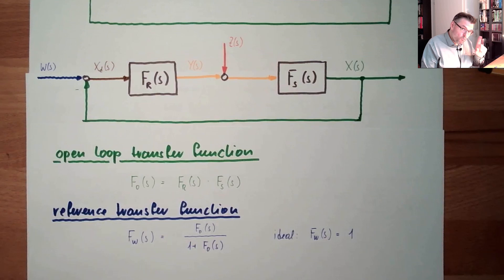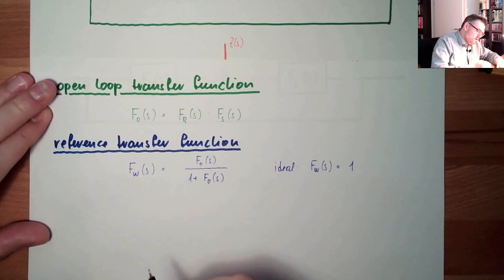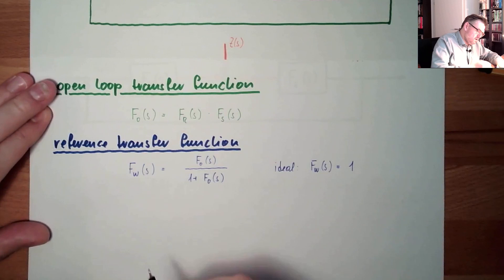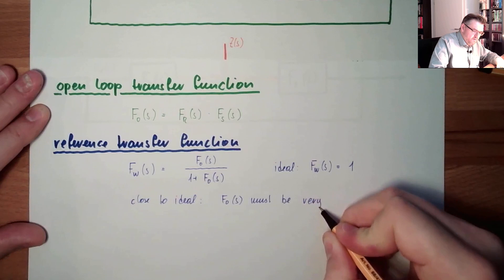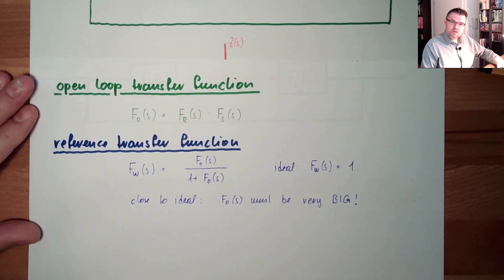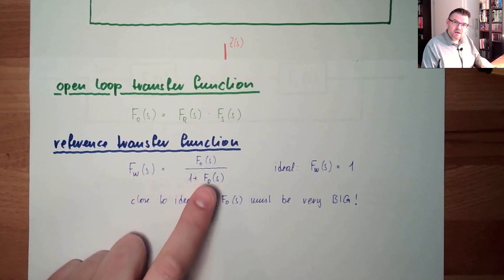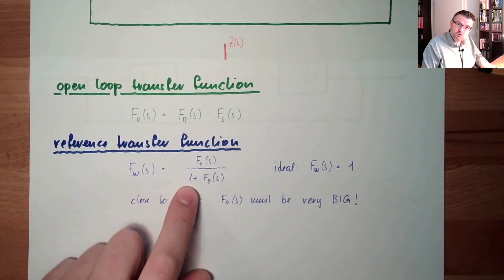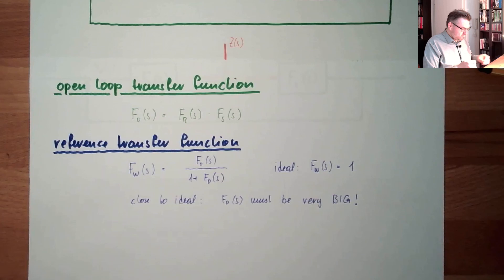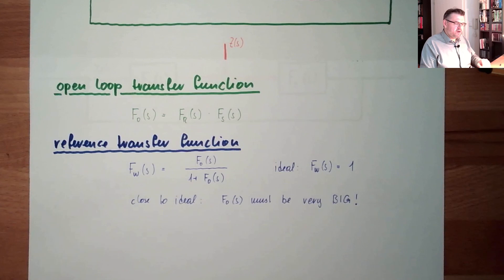What must happen is that we get close to one. How do we get close to ideal? fo must be very big. Because if there is something big divided by one plus big, it is almost one. If fo is small, then the one has a huge impact. If fo is big, we are close to one. So this is our first analysis: the open loop transfer function should be big so that the reference transfer function is close to ideal.